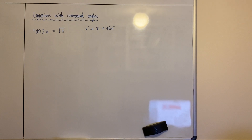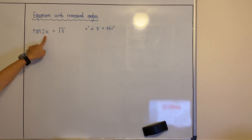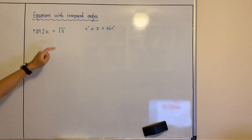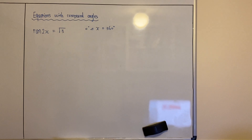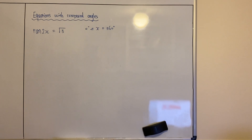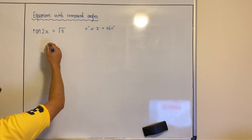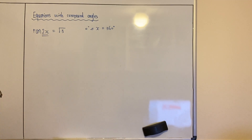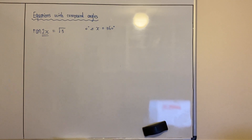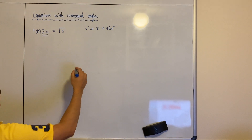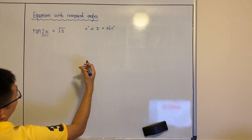How do we solve questions with compound angles? This is not x anymore — it could be 2x, half x, x plus 45, x minus whatever angle. There's only one extra step you need to do, and it depends on what number is in front of x — it could be 2x, 3x, 4x, or half x. The first step is you need to change the domain.